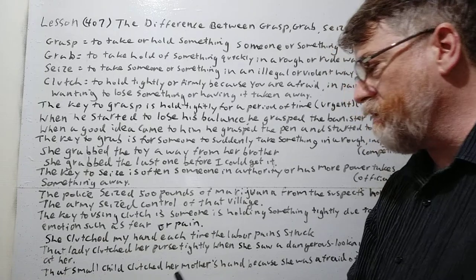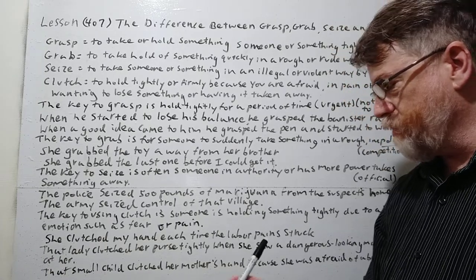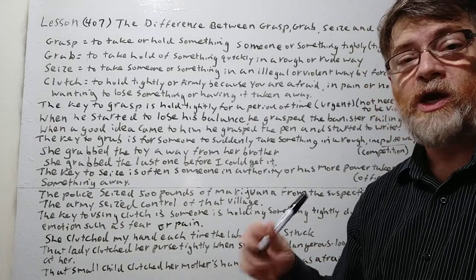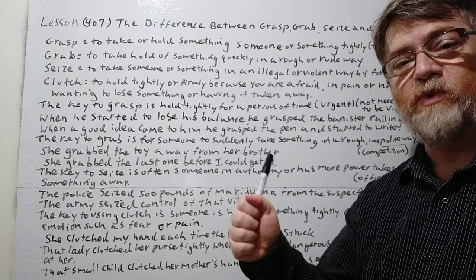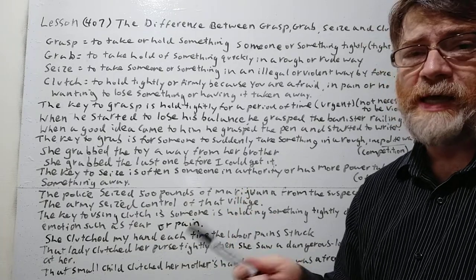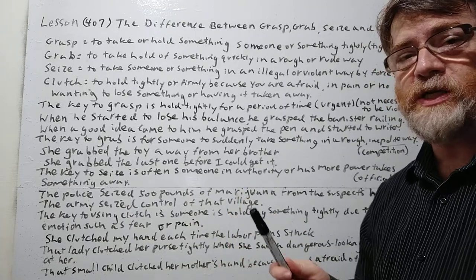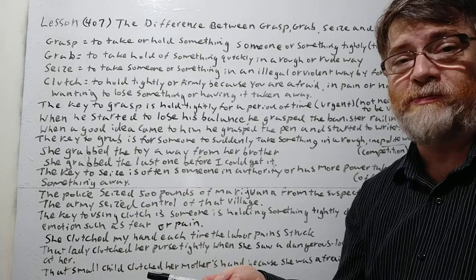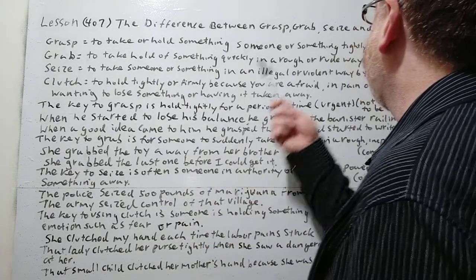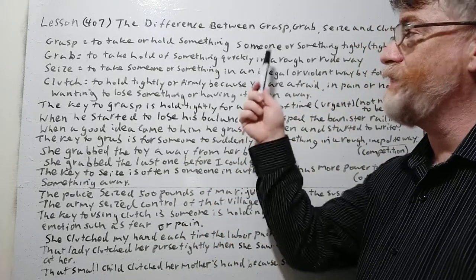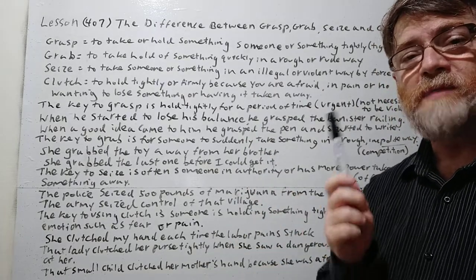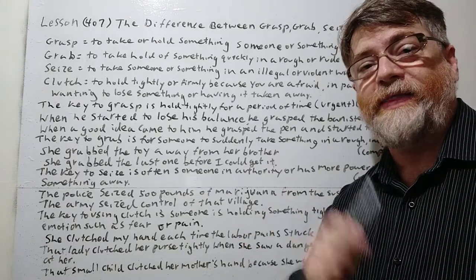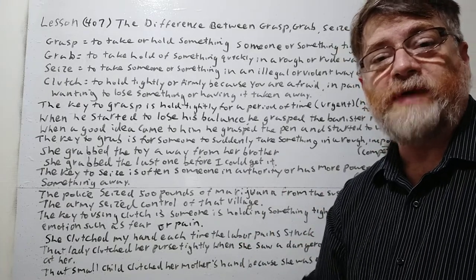That small child clutched her mother's hand because she was afraid of a barking dog — again, nervousness and emotion. That's when we might use clutch. There are some situations where there could be a little crossover, like with grasp and grab, where maybe somebody grabs something tightly in a rough way and both could be used. But generally, I hope these hints give you a better idea of when you're more likely to use one over the other. Thank you for your time. Bye-bye.